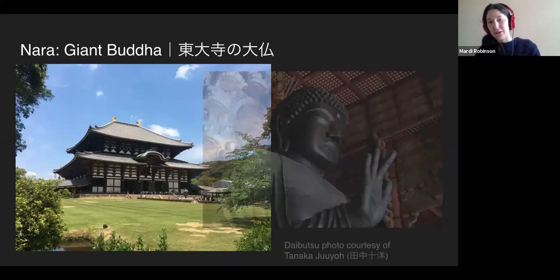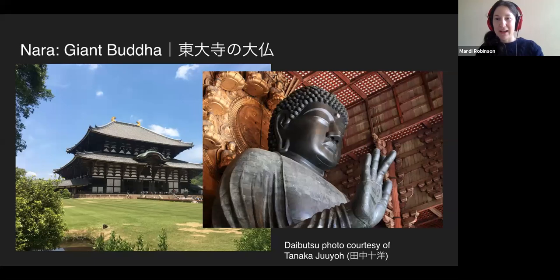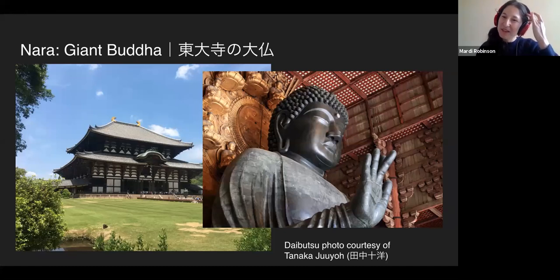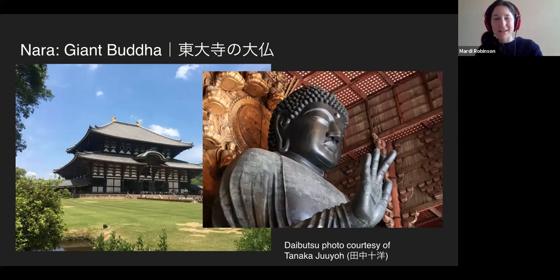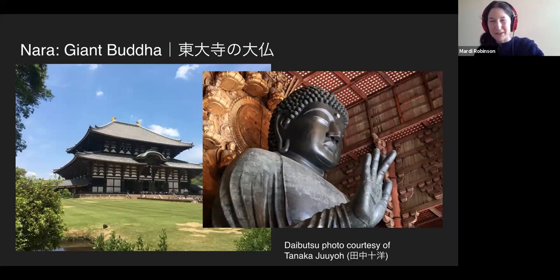Inside the temple is a giant Buddha — the picture does it no justice for size. This is a bronze Buddha. They made the clay sculpture first, then cast it in different parts and put it all together. At one point the head did fall off, but they did replace it. The temple itself was not free from fire and warfare — it did burn down, but thankfully metal did not melt. The current temple is from the medieval period, rebuilt by the Tokugawa Shogun's family — the same family who also burned down Osaka Castle.